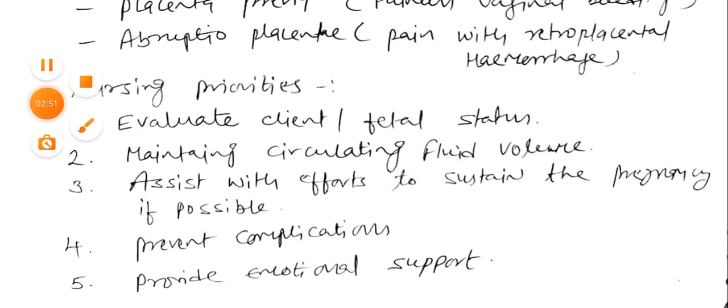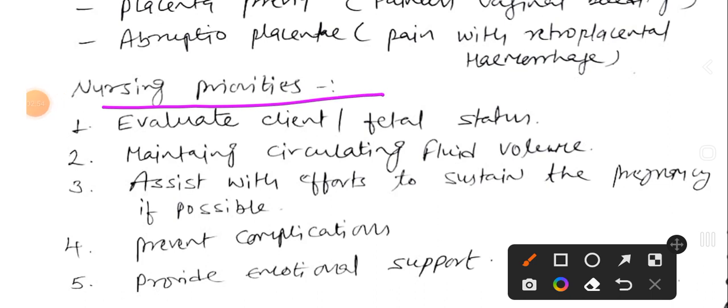Next we establish nursing priorities for the antepartum hemorrhage care plan. These are: first, evaluate the client's and fetal status; second, maintain circulating fluid volume; third, assist with efforts to sustain the pregnancy if possible; fourth, prevent complications; and fifth, provide emotional support to the patient.